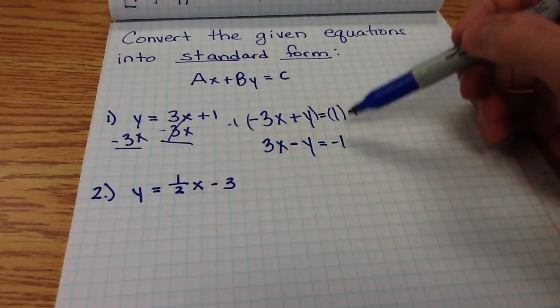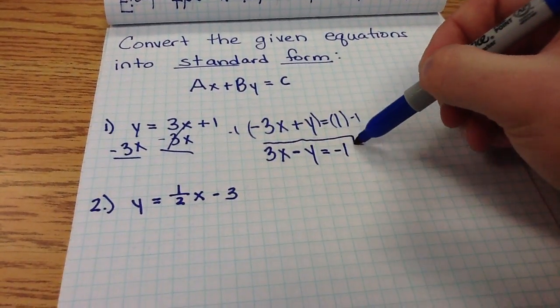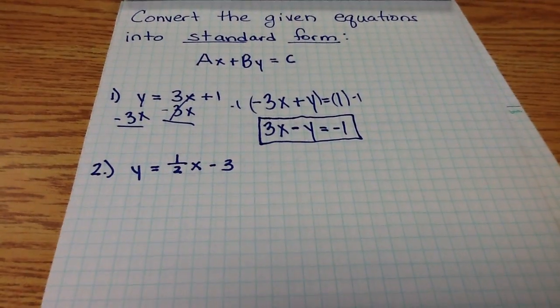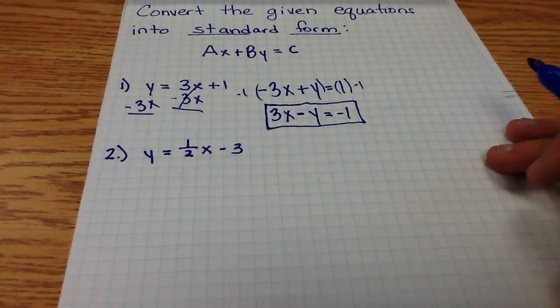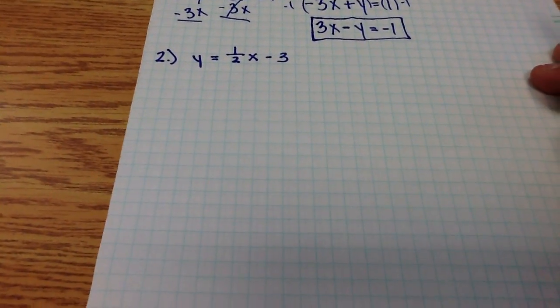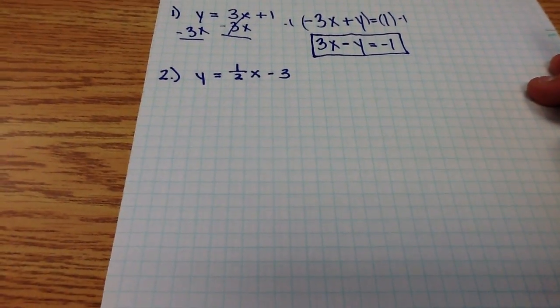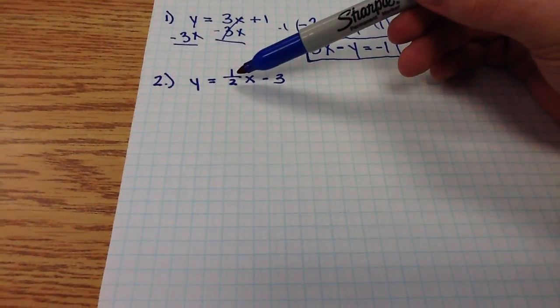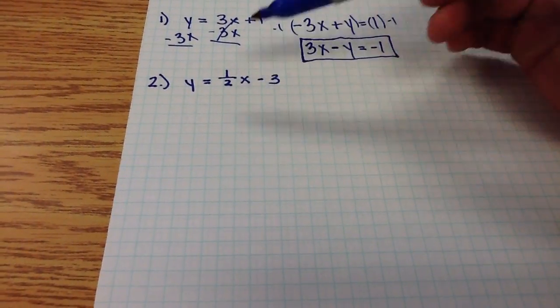This is an acceptable answer, but it's just conventional to have that A term be positive. That was the easy one. This next one, y equals one-half x minus 3, is a little bit more difficult, because when we look at the coefficient of x, it is no longer an integer. Rather, it's a fraction.